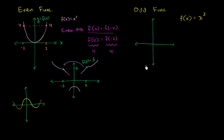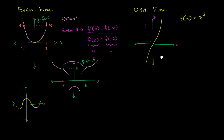f of x equals x cubed looks like this — you might have seen the graph. The way to visually recognize an odd function: you look at what's going on to the right of the y-axis, and if you reflect it over the y-axis you get something like a mirror image. But for an odd function, we then also reflect it over the x-axis — so you do two reflections. Reflecting over y-axis and then making it negative, or equivalently over x-axis then y-axis, gets you the odd function's left side.